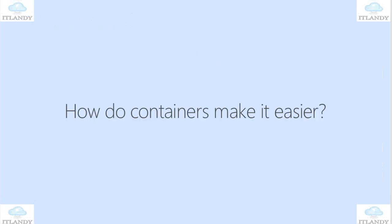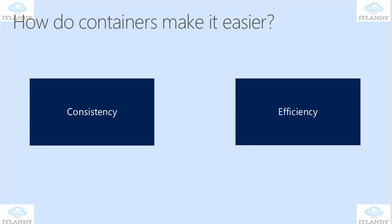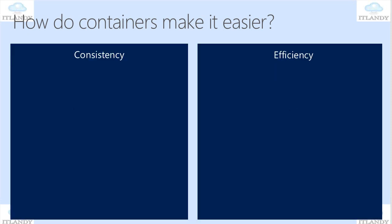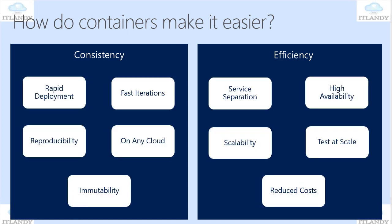Let's dive into this at a high level. We can create some bullet points or pillars about that. We take into consideration two topics: consistency and efficiency. Within consistency, it's fast iteration on any cloud, can be run immutable, reproducible, and rapid deployment. These are the benefits of having a container across public or even private cloud.